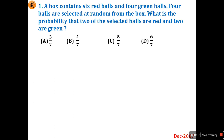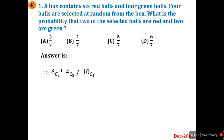Out of six red balls and four green balls, they are selecting four balls. Find the probability that exactly two belong to red and two belong to green. The formula is: 6C2 (choose two from six red balls) multiplied by 4C2 (choose two from four green balls).